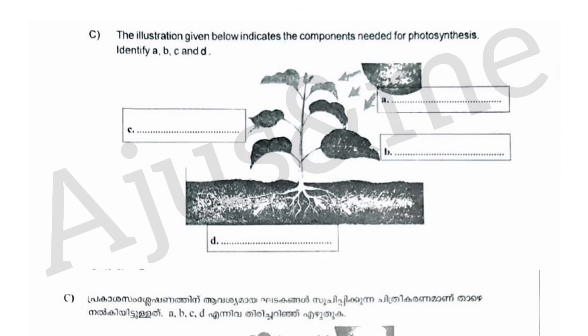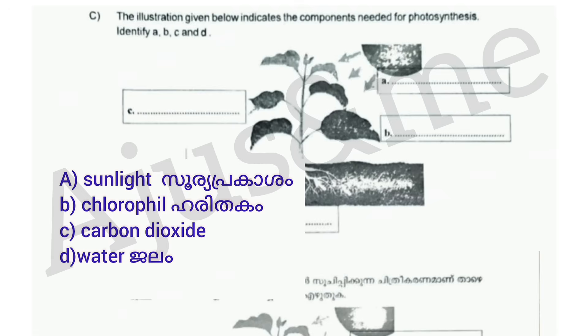A is sunlight. B is chlorophyll. C is carbon dioxide. D is water.